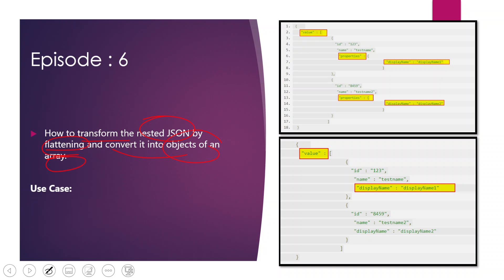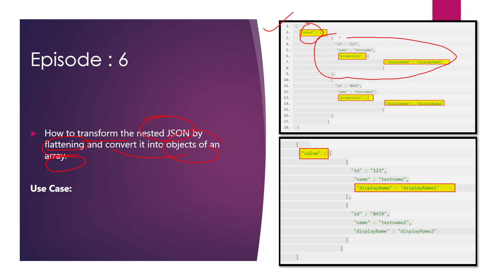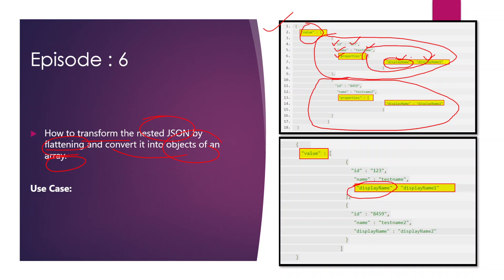If you take a look at the first image which is the source data, we have a JSON with a property called 'value' which is in array format. Inside this array there are two items. In each of the arrays there are properties like 'id', 'name', and 'properties' which holds a value as a JSON key-value pair. What we need to do is flatten this data and have 'displayName' as a standalone property instead of being nested inside another property.